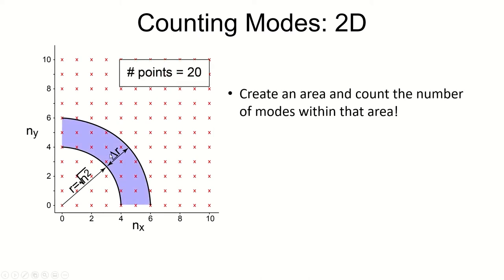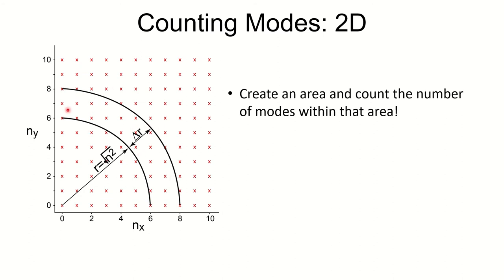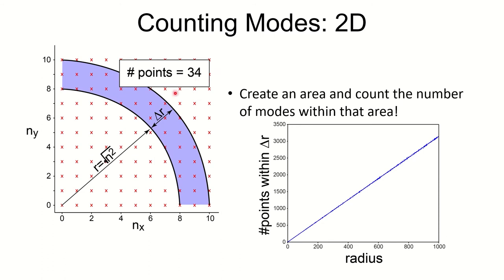Within that quarter disk area, I can perfectly count the modes. At a radius of eight with a certain spread, there are 34 points. The relationship between number of modes and area is straightforward: each point picks up one unit of area, so three points gives three units of area, and so on. The formula for the area of a quarter annular ring is one-half pi r times delta r. Fitting that to the data, it matches exactly.